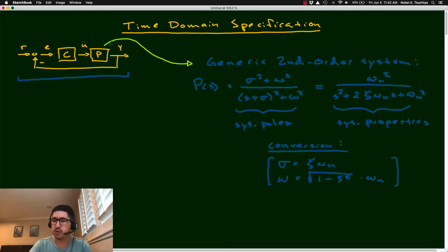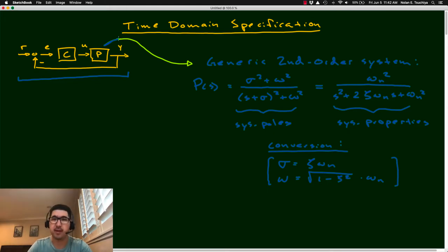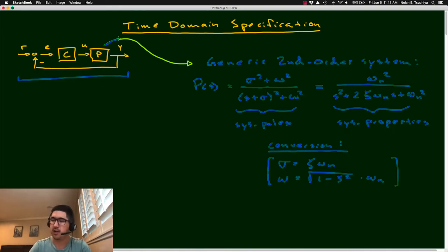Everything up until this point has been understanding how the plant itself — the system dynamics we're trying to control — behaves. You have to understand the dynamic behavior behind that system before we can close the loop and do any meaningful control design. So in today's lecture, we're going to talk about something called the time domain specification.